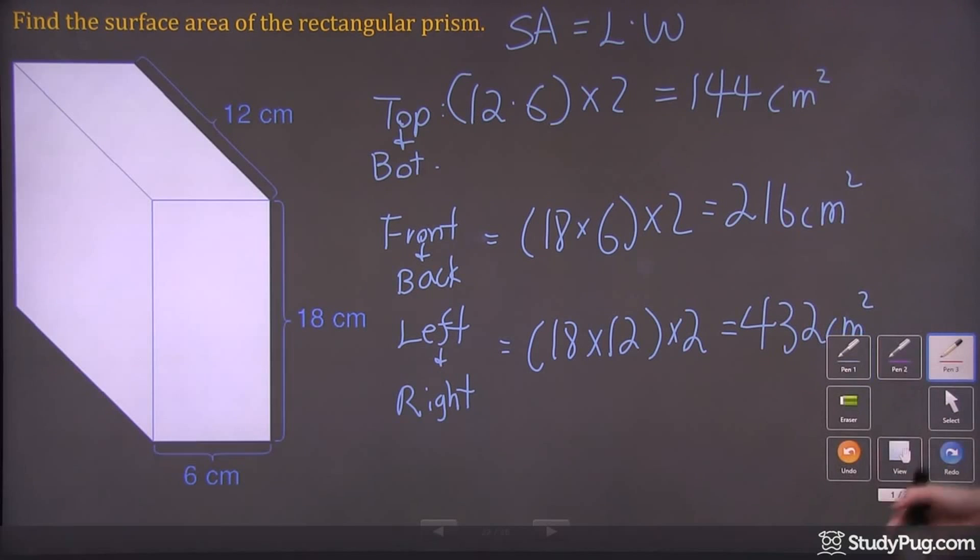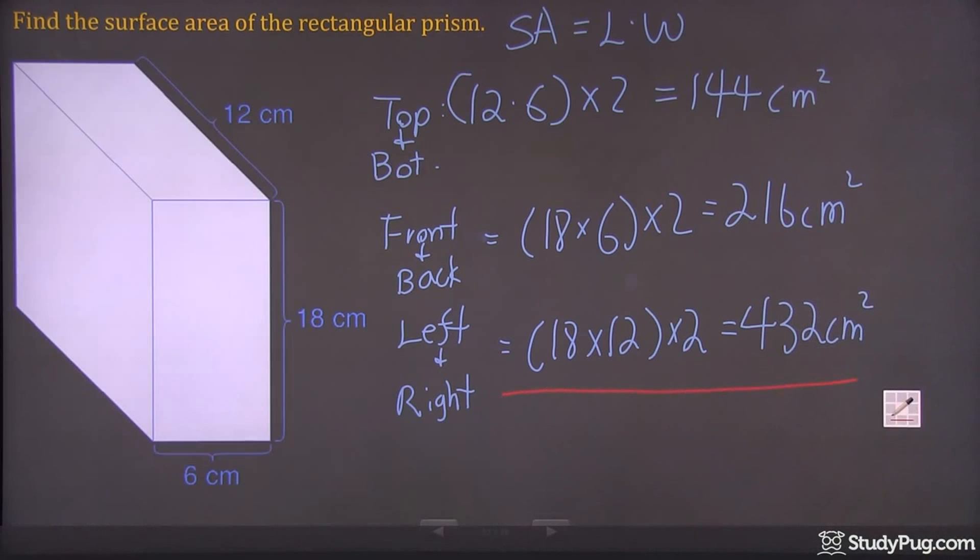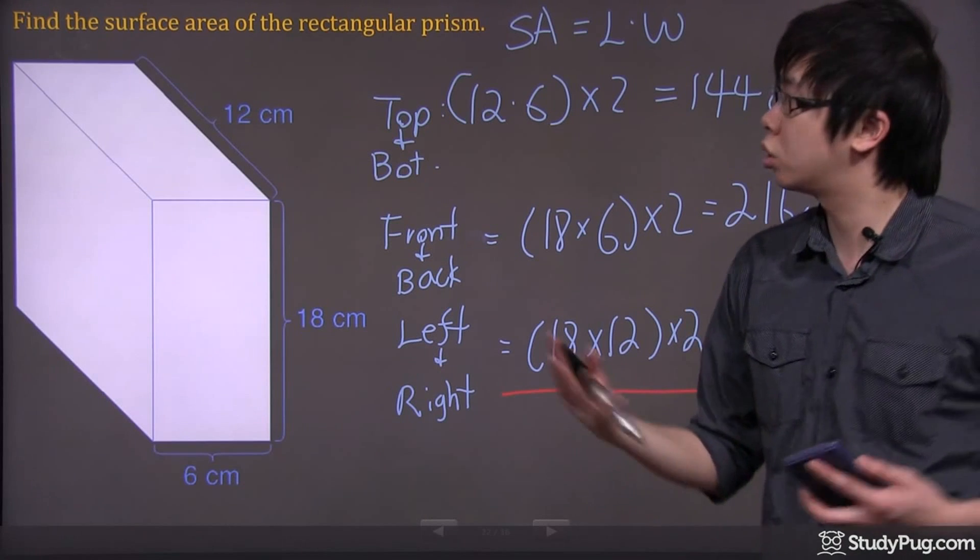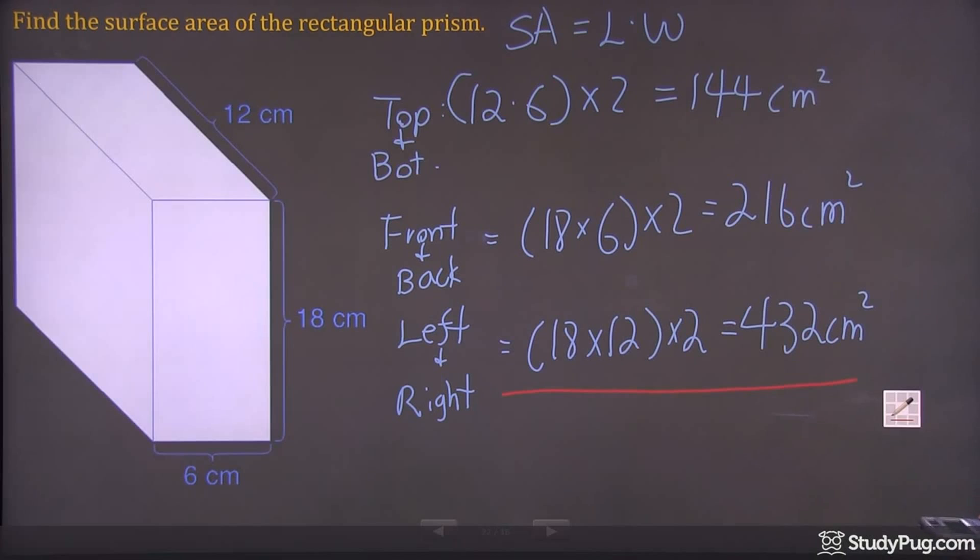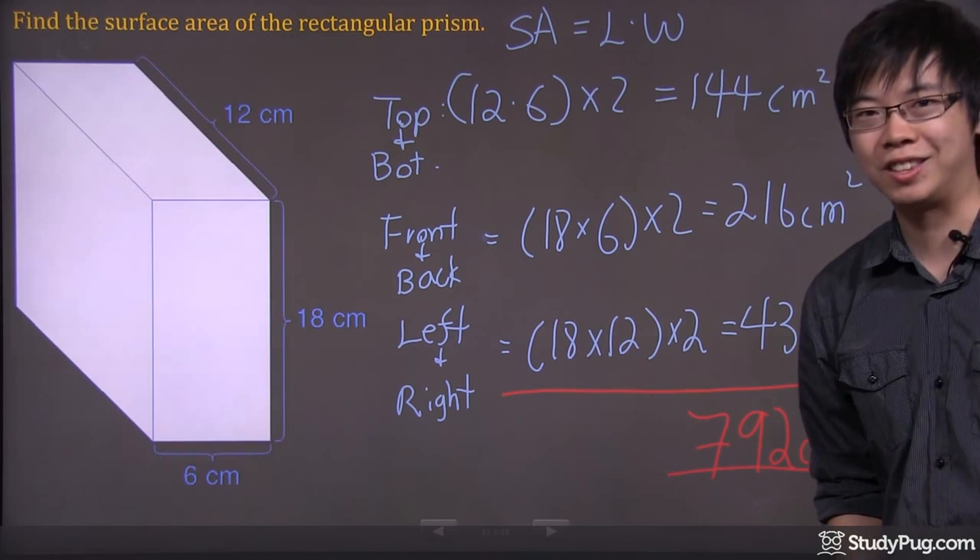So at the very end of this, all you have to do is add up the total, because we're looking for the total surface area of the entire rectangular prism. So we're going to go from the beginning: 144 plus 216 plus 432. We end up with 792. Don't forget your units. That will be your final answer. Thanks for watching.